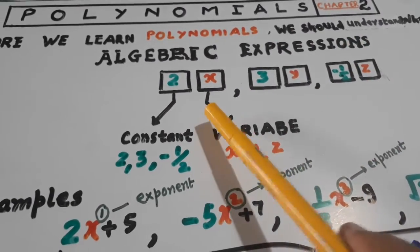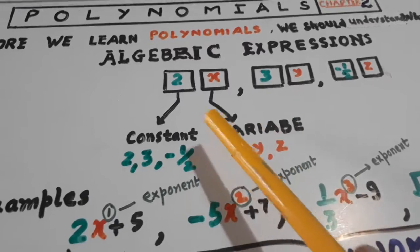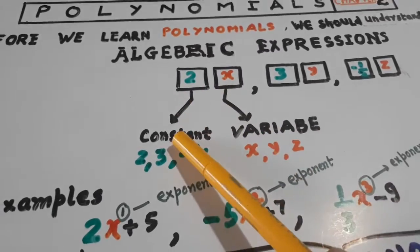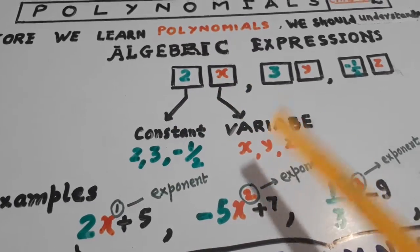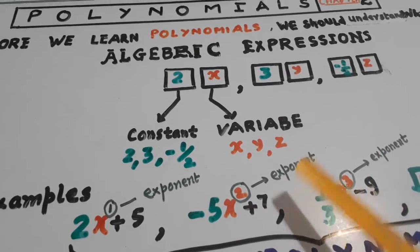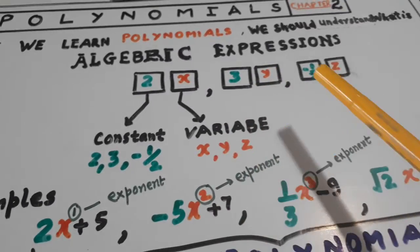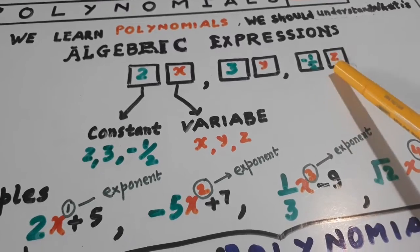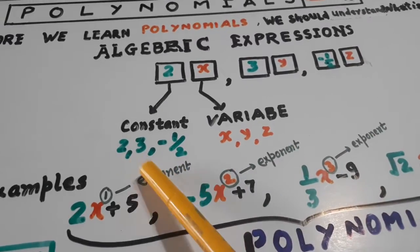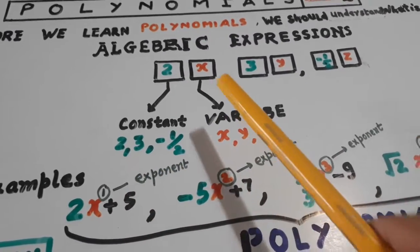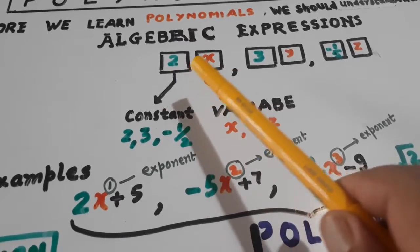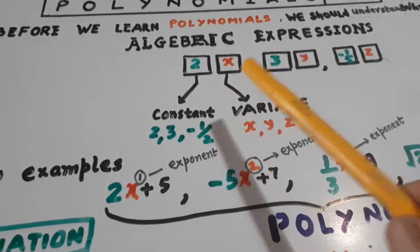Look here, I have given you three expressions. In each there are constants and variables. Constants bhi hain, variable bhi hain. Jab ye constant or variable hoota hai, isi ko bolta hai algebraic expression.